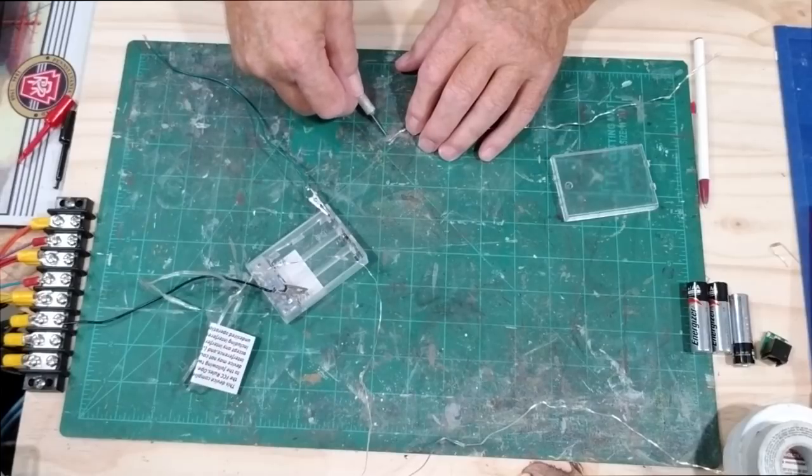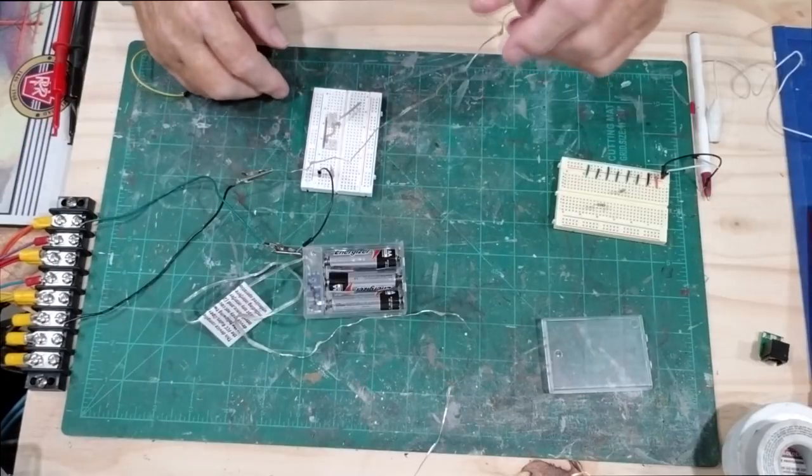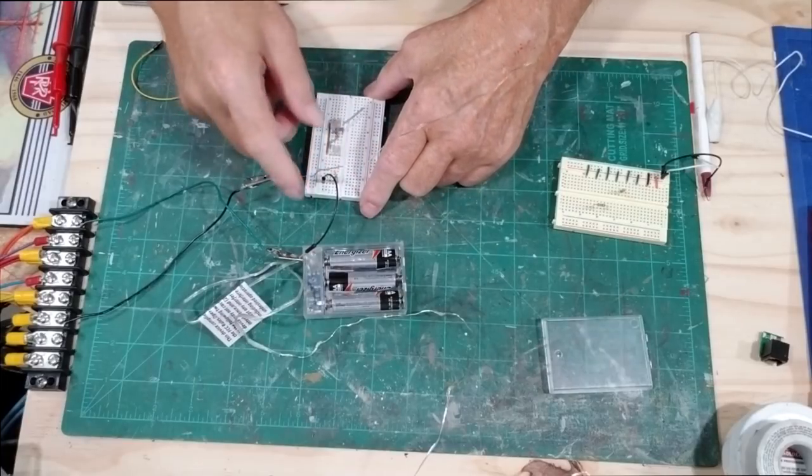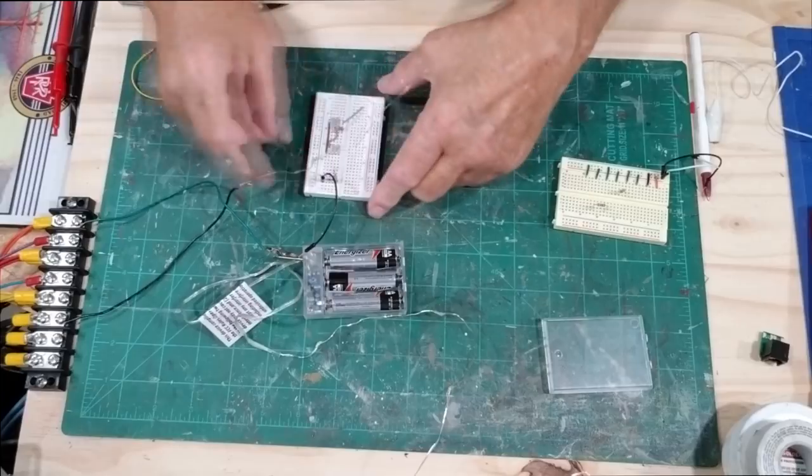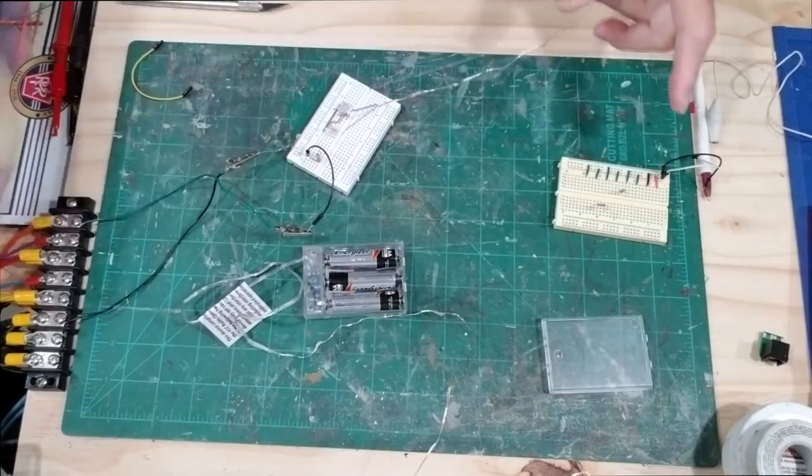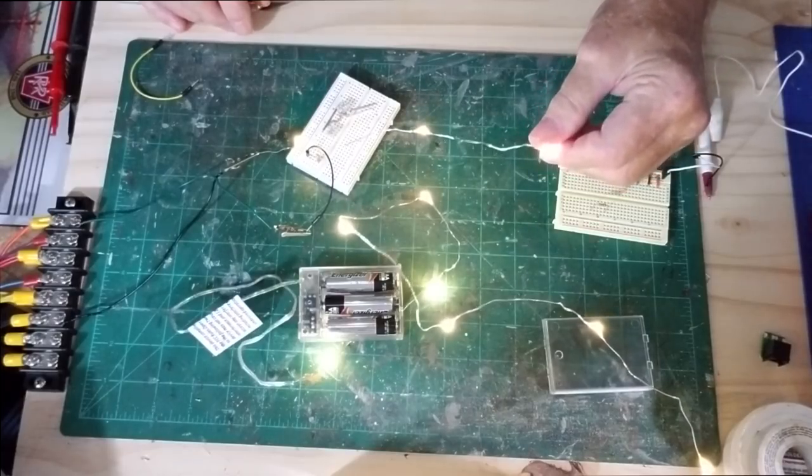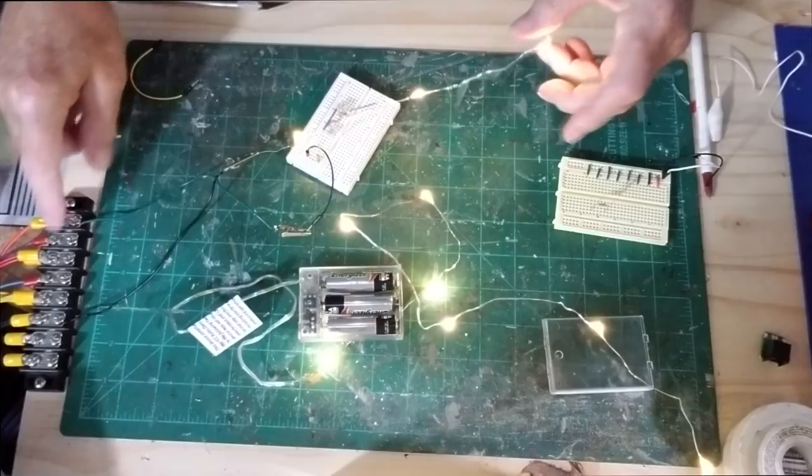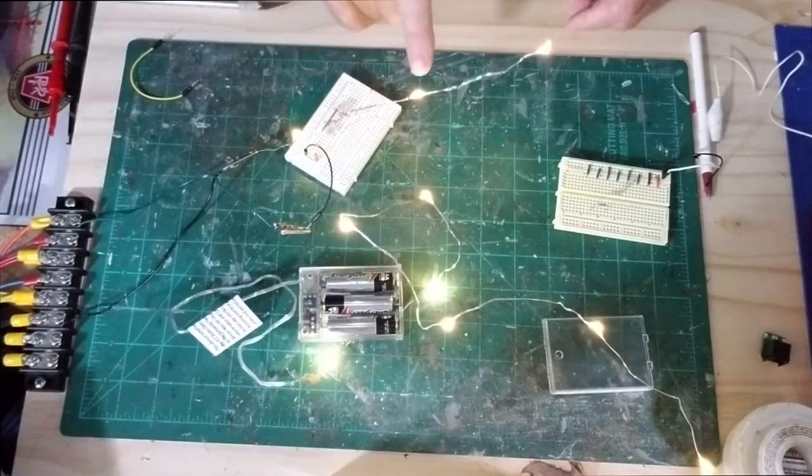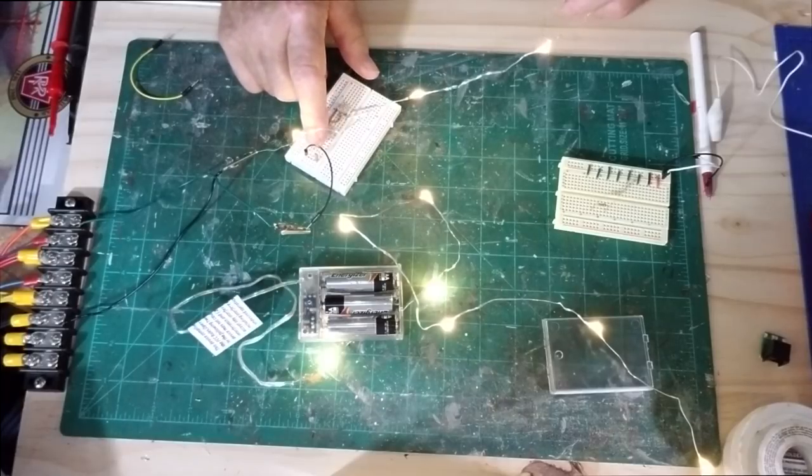Now I have the string of three right here. I put a 100 ohm resistor on the breadboard and I have this hooked up to 3.3 volts. Let me turn this on. You could see the difference. I have three of them together on 3.3 volts with a 100 ohm resistor in series and they look pretty good for lighting up a building.